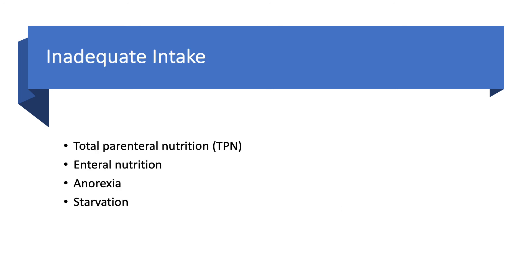Number five: inadequate intake. You can see this in TPN if not enough potassium is added, or in enteral nutrition using a potassium-poor solution like NEPRO — used in renal patients, but if they become hypokalemic you can switch to a different solution. In anorexia and starvation, the kidneys will preserve potassium — not as well as sodium, but they do a reasonable job — so intake must be really low to cause hypokalemia.